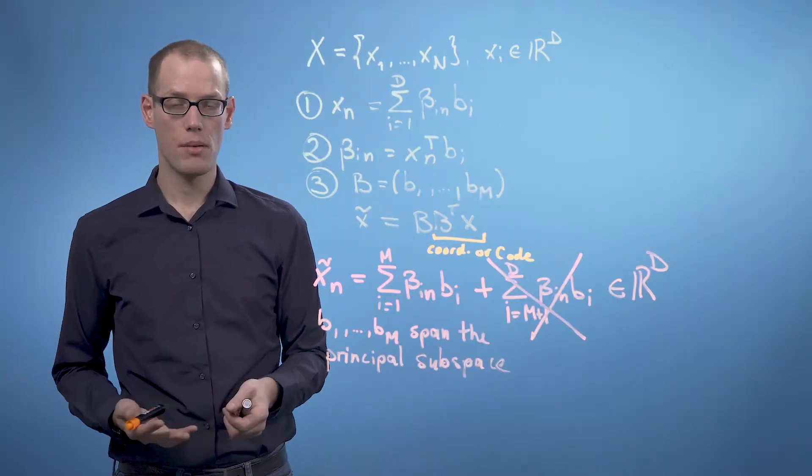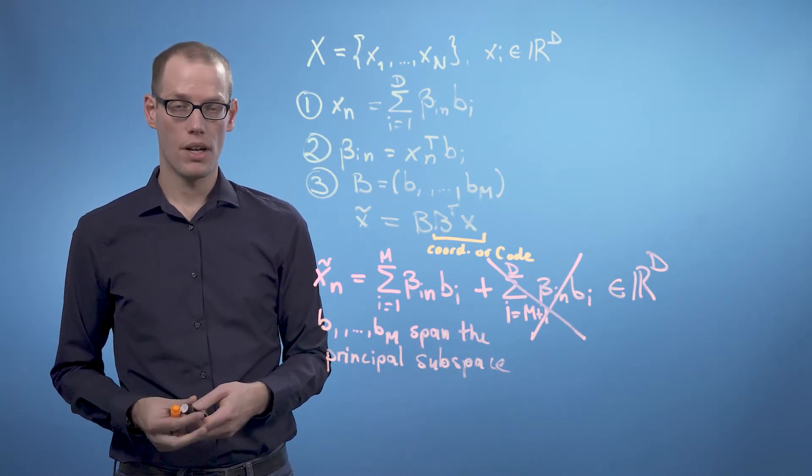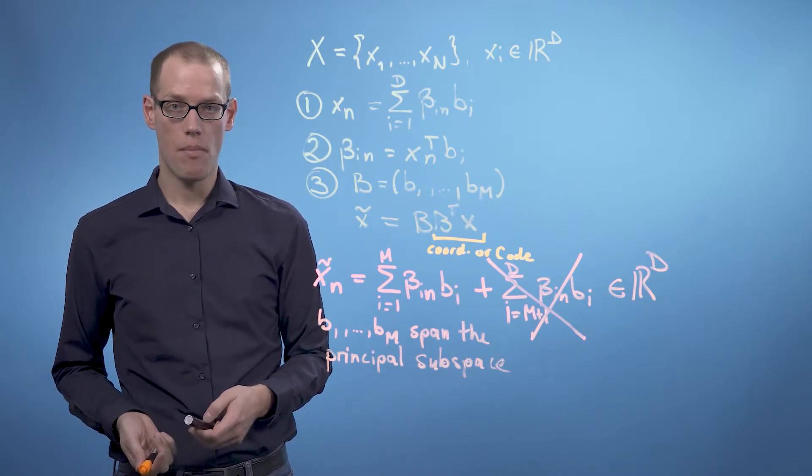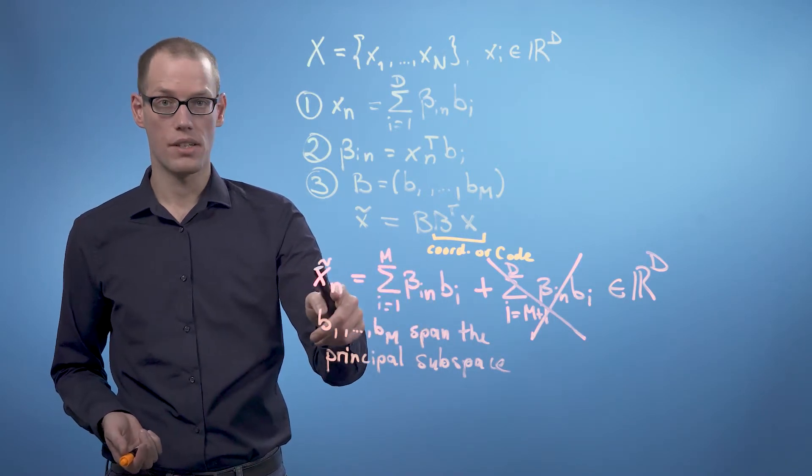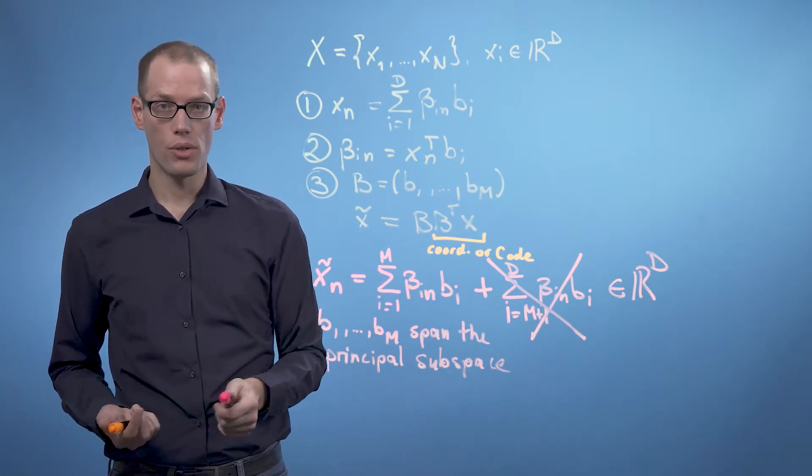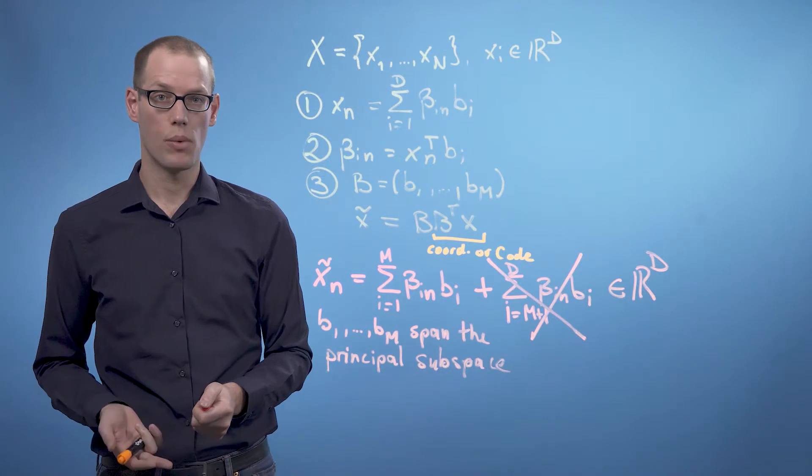Although X_n tilde is still a d-dimensional vector, it lives in an m-dimensional subspace of R^d, and only m coordinates beta_n1 to beta_nm are necessary to represent it. The betas are then also called the code or the coordinates of tilde X_n with respect to the basis vectors b_1 to b_m.